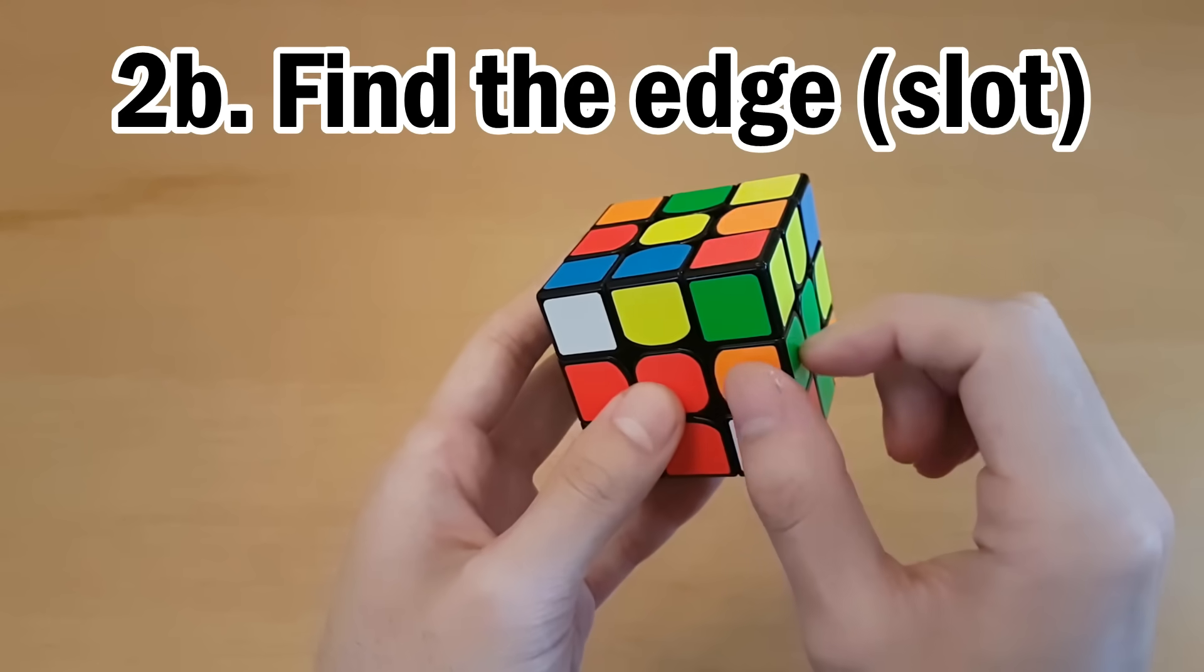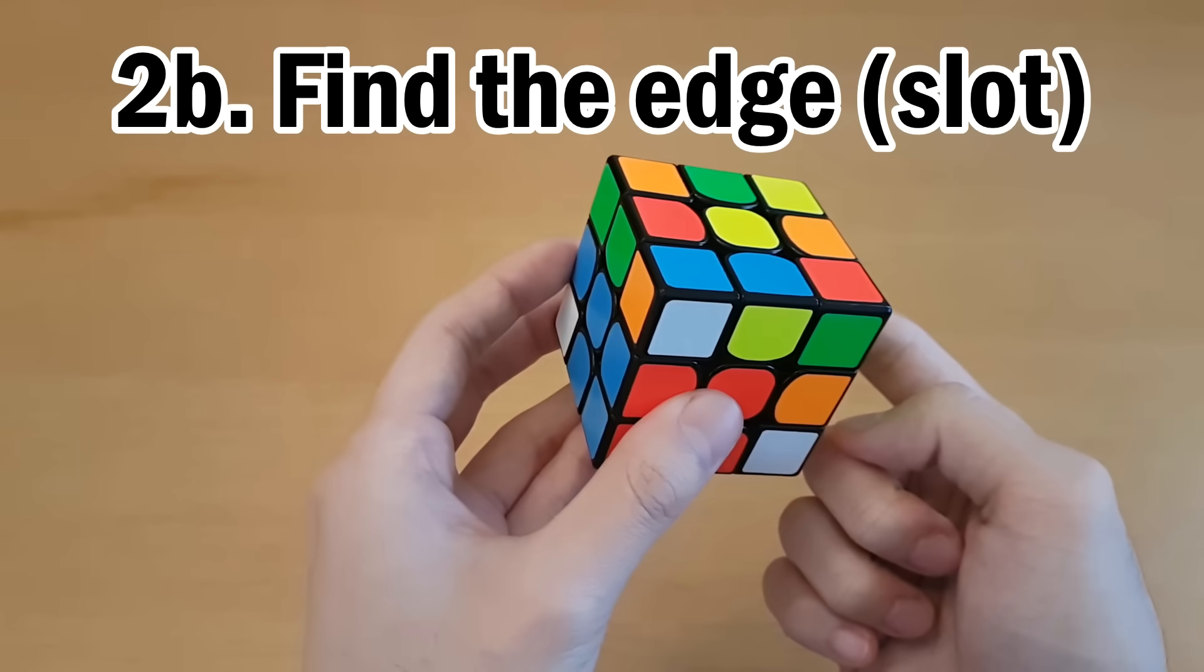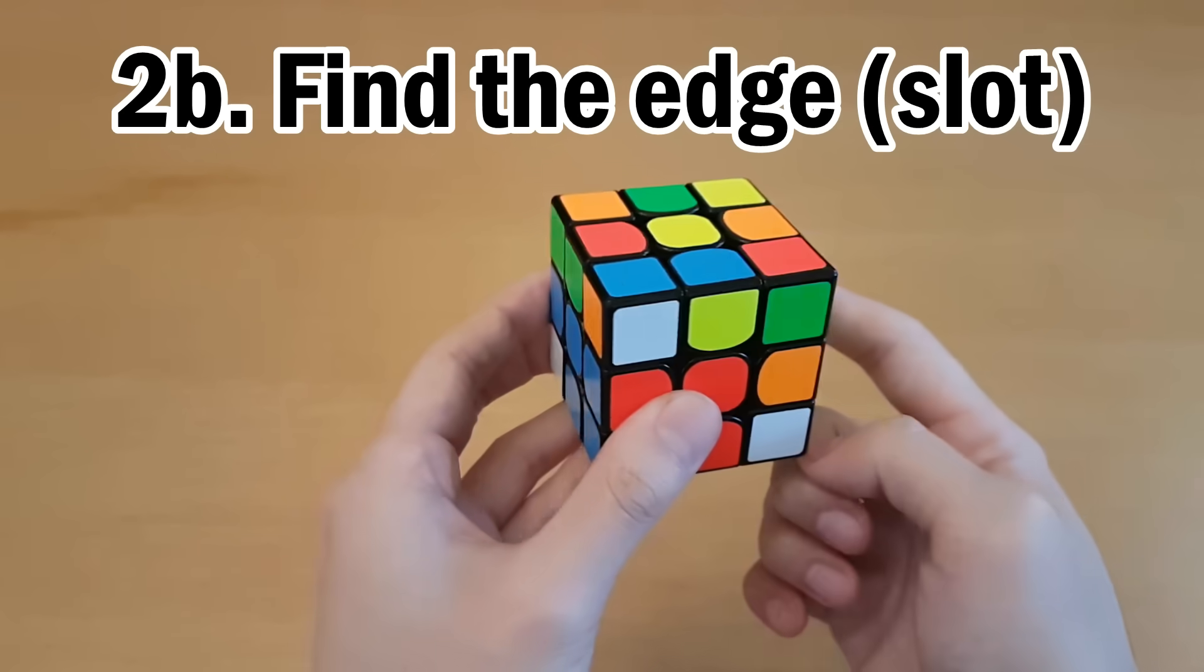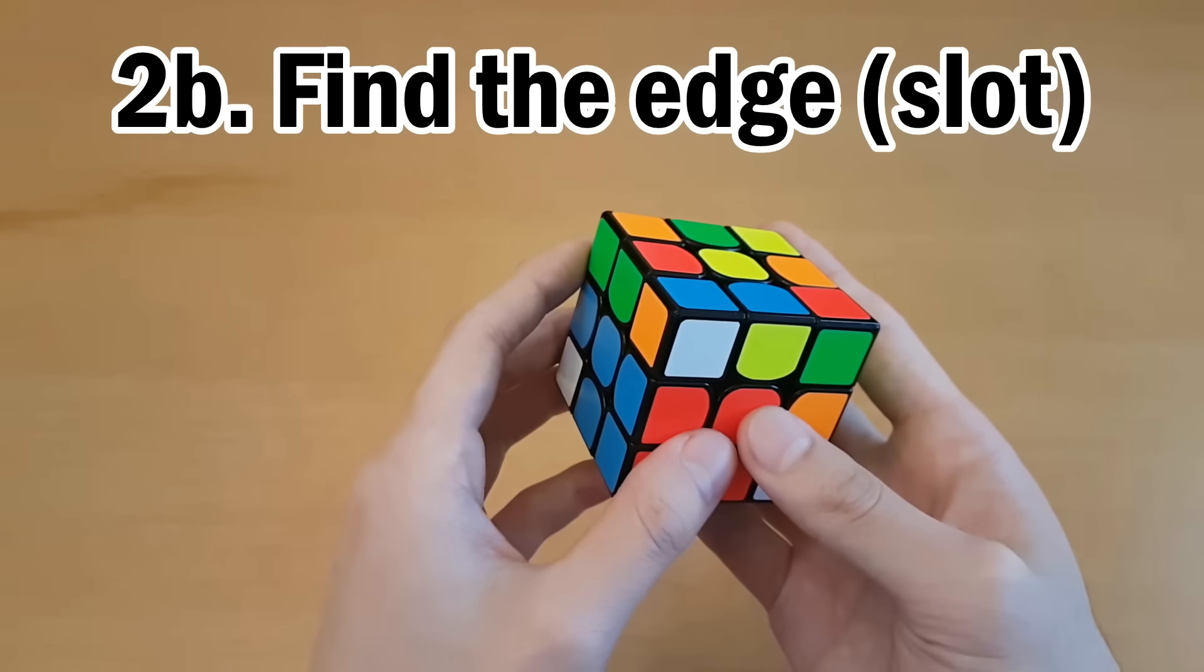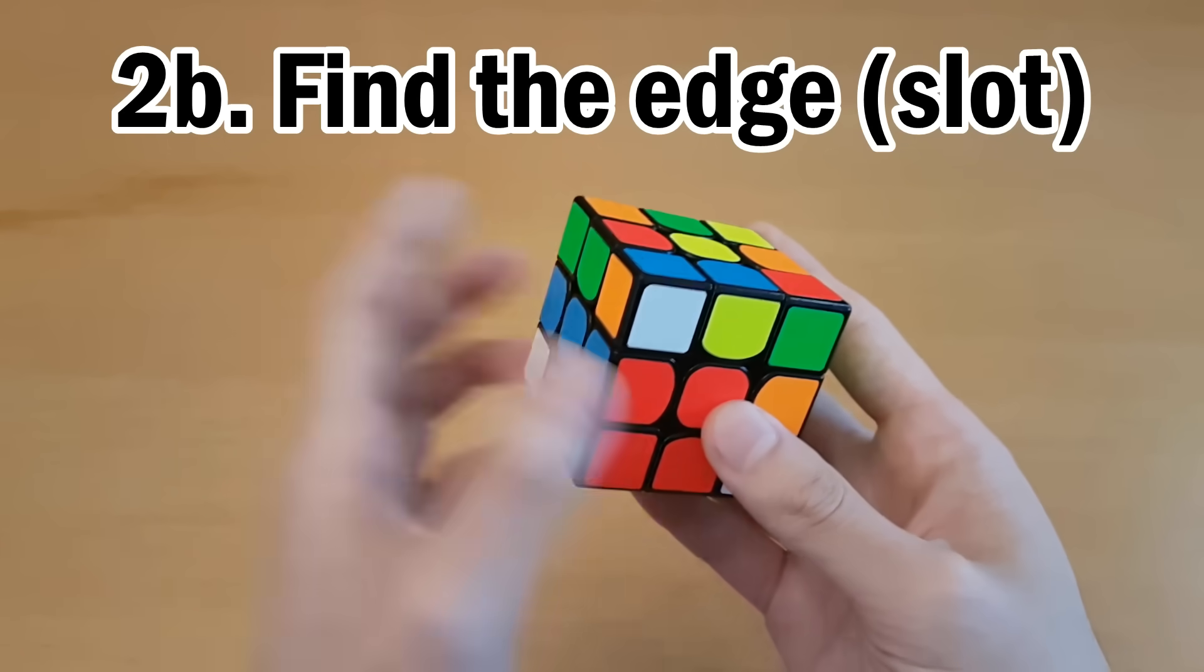The front slot is very easy to see, because you can see both of its colors, but the back slots are a little harder to see. In this case, this one is yellow, so it's obviously not the one that goes with this, so it must be that one. But that can take a while to deduce, and that is quite advanced. So how can you make this easier on yourself?